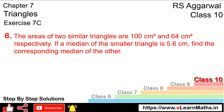Let's do question number 8 of XI 7C, that is Triangles. Question number 8: the areas of two similar triangles are 100 cm² and 64 cm² respectively. If a median of the smaller triangle is 5.6 cm, then find the corresponding median of the other triangle.